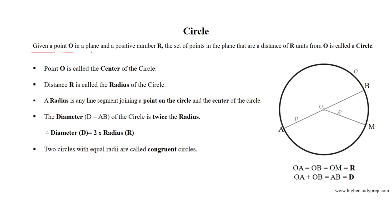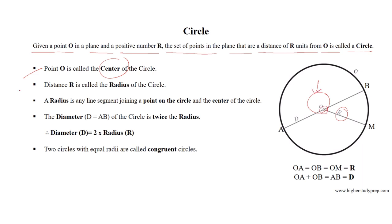Given a point O in a plane and a positive number R, the set of points in a plane that are a distance of R units from O is called a circle. Point O is called the center of the circle and the distance R is called the radius of the circle.